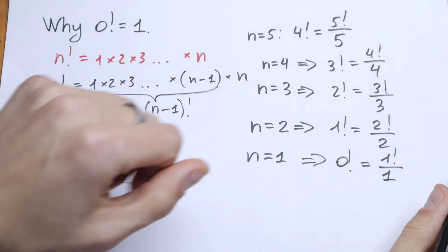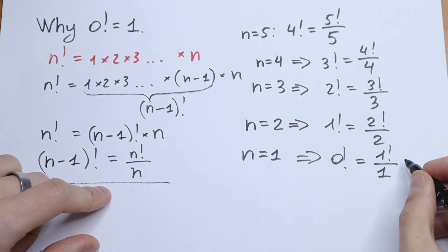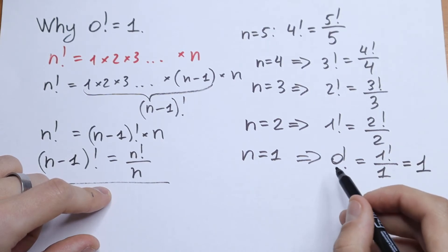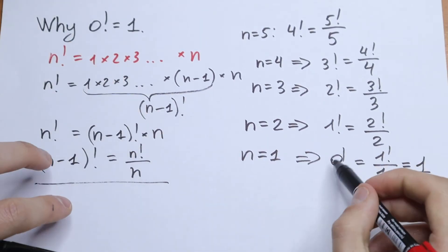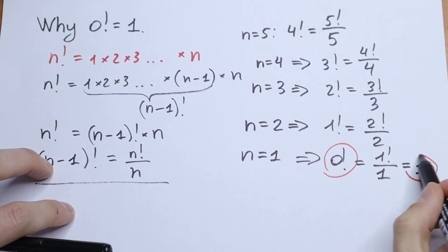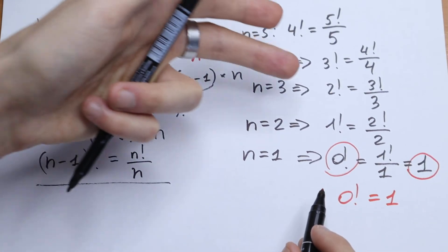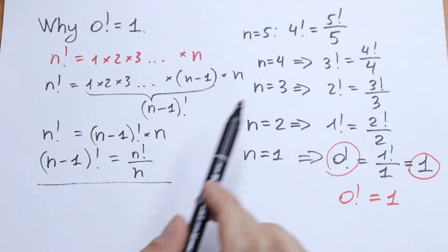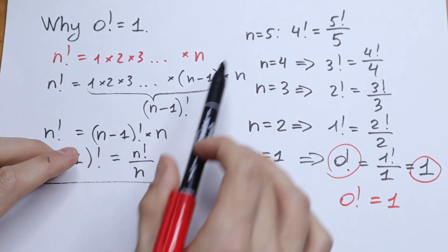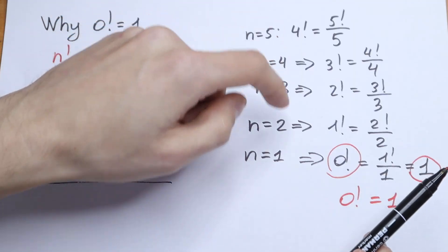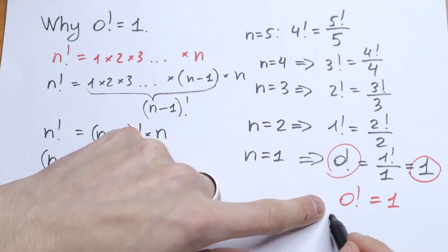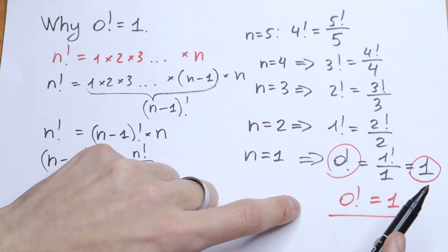And of course, we can calculate this. 1 factorial will be 1 and divided by 1 will be 1 as well. So from here, 0 factorial is equal to 1. This is not hard logic. We find the previous element. And we are just getting step by step to 0. And as you can see, 0 factorial equal to 1.